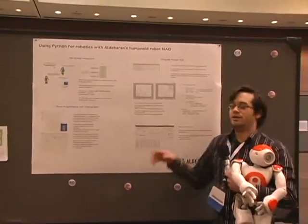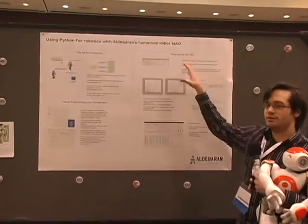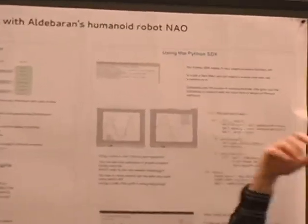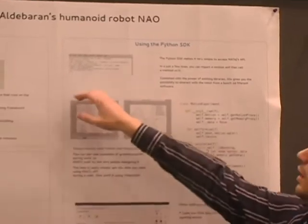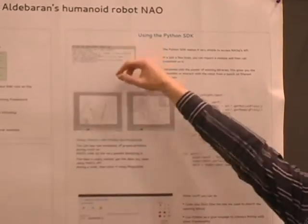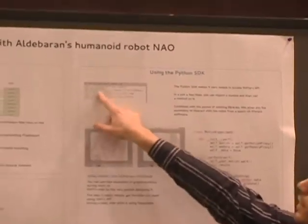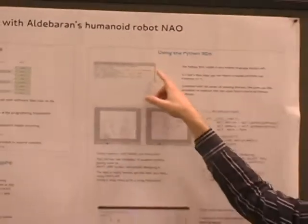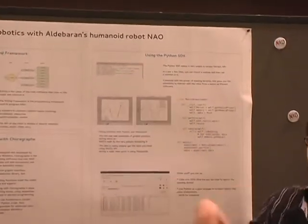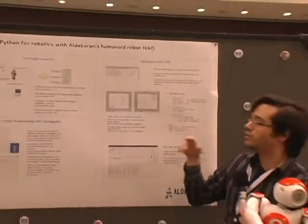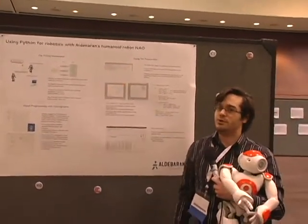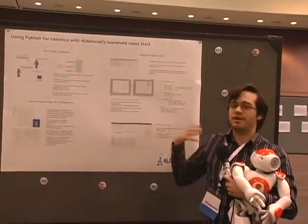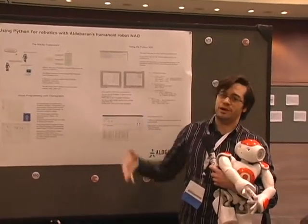Now we have a Python SDK, so the whole API is usable directly from Python. Here you import Naoki, then you create a proxy to the module named text-to-speech, and making the robot speak is just calling the say method of the text-to-speech proxy. Making the robot say hello world is just a matter of three lines of Python.